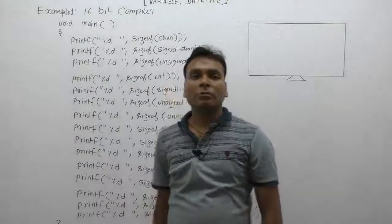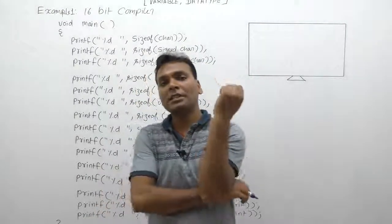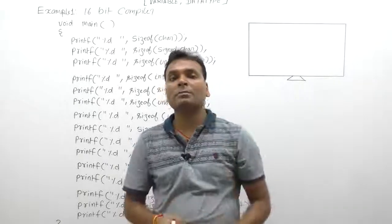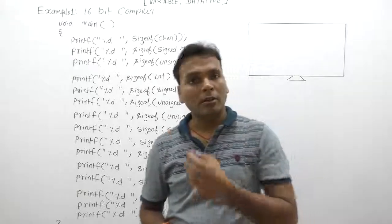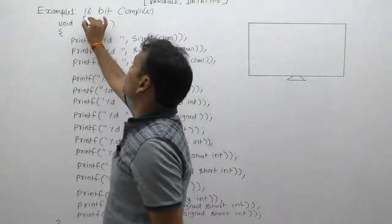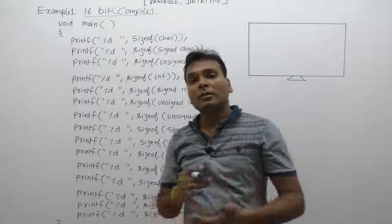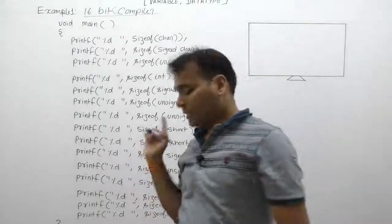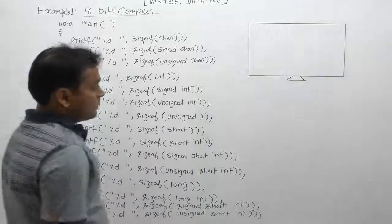Let's see this example with respect to the size property of different data types, or how to test the size of any data type using C programs. We are also able to display the size of any data type with respect to different qualifiers or directly by data type. Here we are providing and executing this program with respect to a 16-bit C compiler, because some behavior of data types depends upon the compiler.